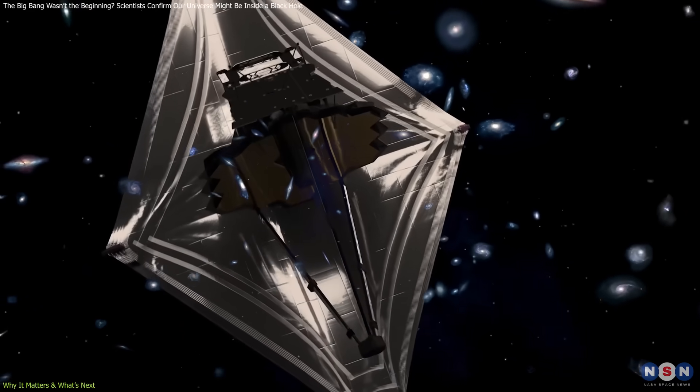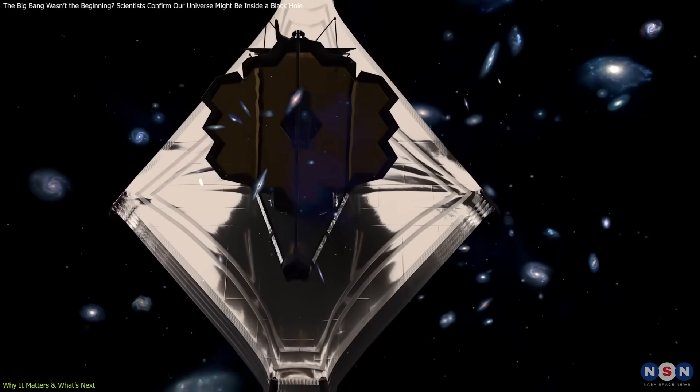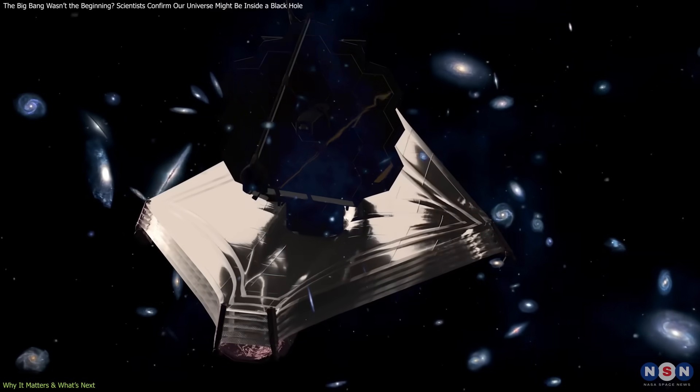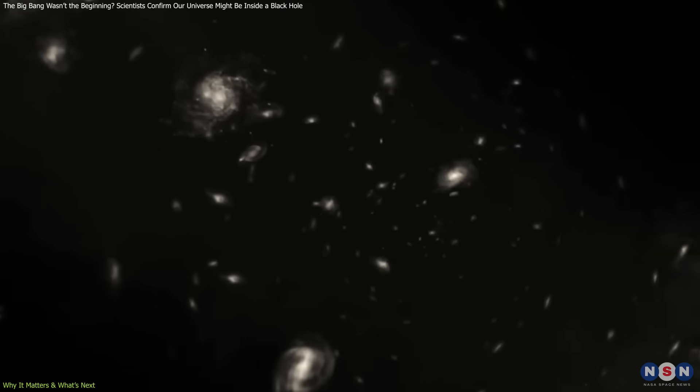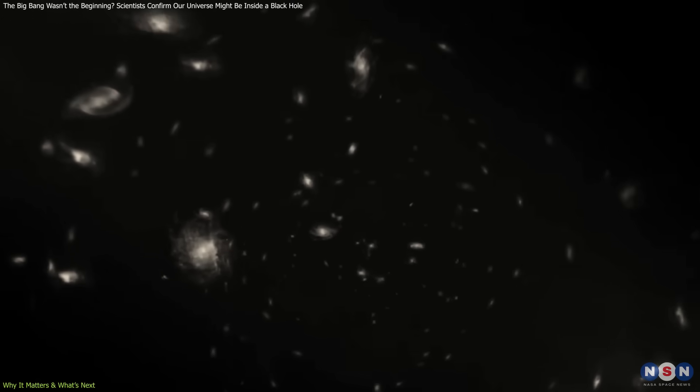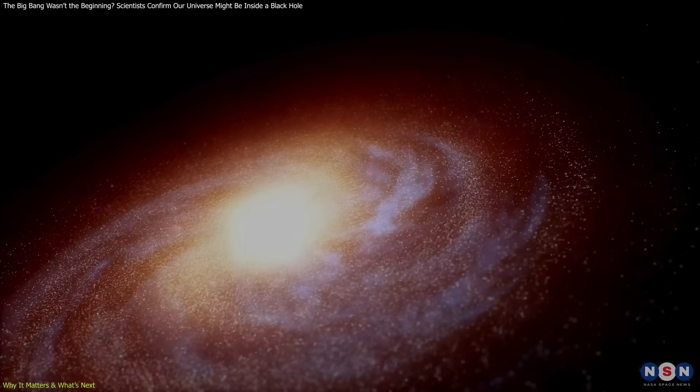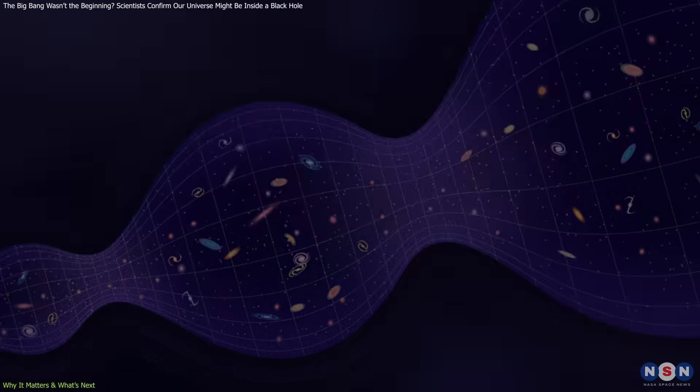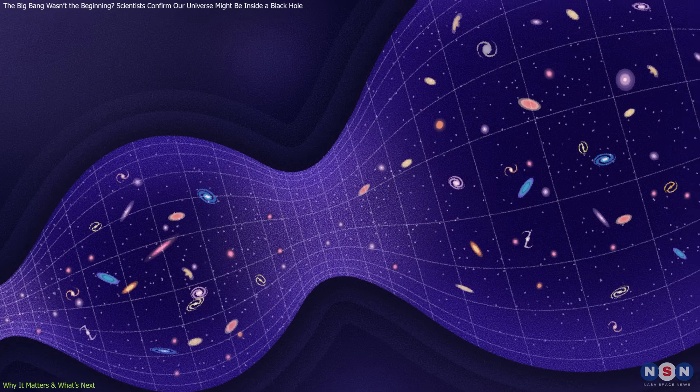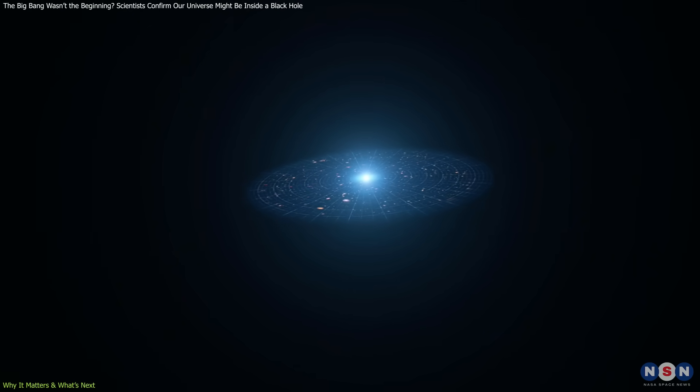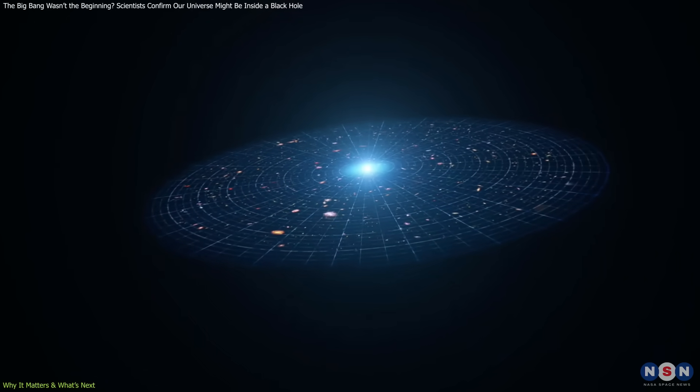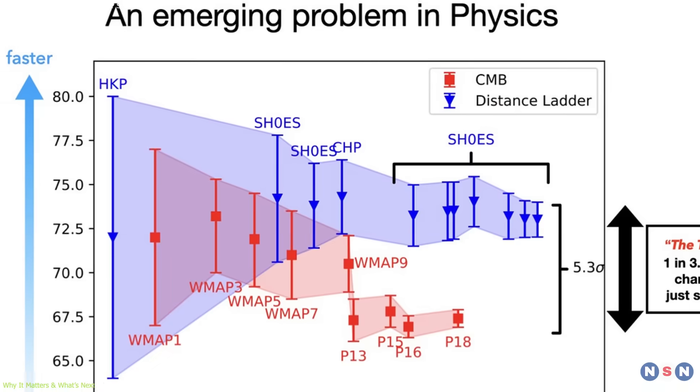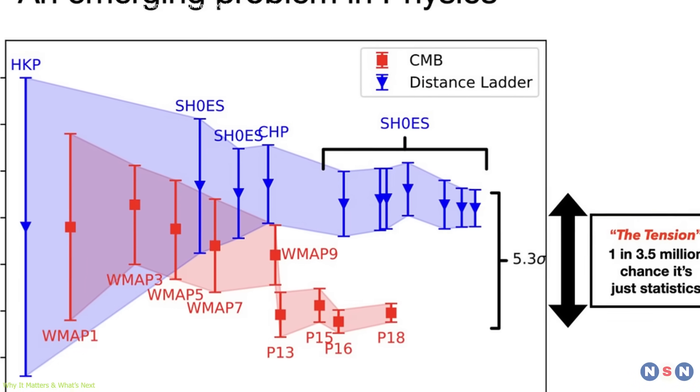So, what's next? Expanded surveys: JWST will continue its deep field observations, capturing thousands more early galaxies for study. Search for relics: scientists will look for primordial black holes or other remnants that could support a bounce universe model. Revised measurements: cosmologists may need to re-evaluate distance and expansion calculations, which could also help resolve existing tensions in cosmology.